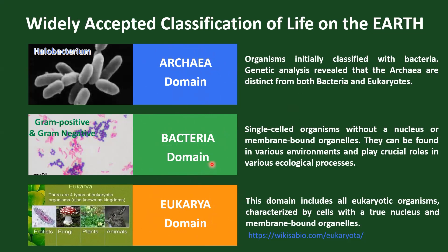The Bacteria domain is different from Archaea and includes single-celled organisms without a nucleus or membrane-bound organelles. They can be found in various environments and play crucial roles in various ecological processes. The Eukarya domain comprises all eukaryotic organisms characterized by cells with a true nucleus and membrane-bound organelles. Eukarya has four kingdoms: Protists, Fungi, Plants, and Animals.